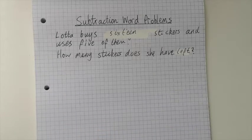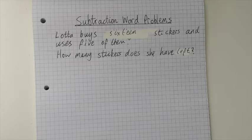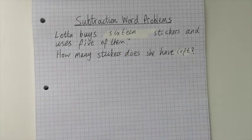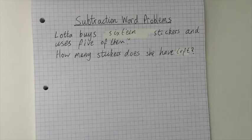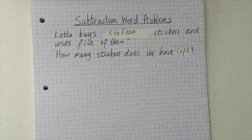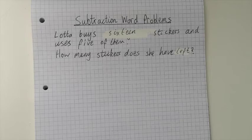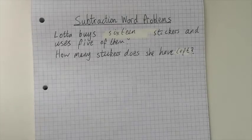Here we have our first subtraction word problem. When solving a word problem, there are two things you need to do: one is understand where the numbers are, which we talked about last week, and the second is understanding what type of operation you're using - is it addition, subtraction, multiplication, or division?